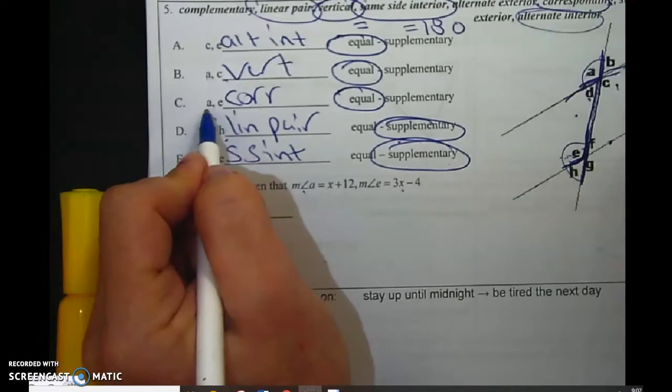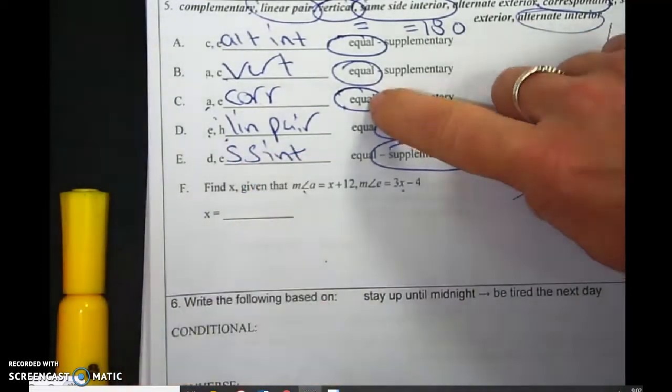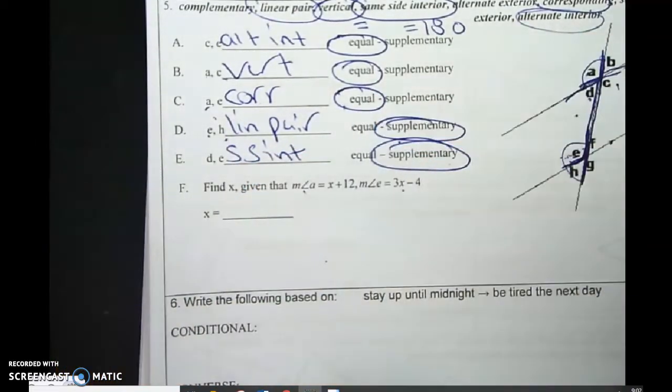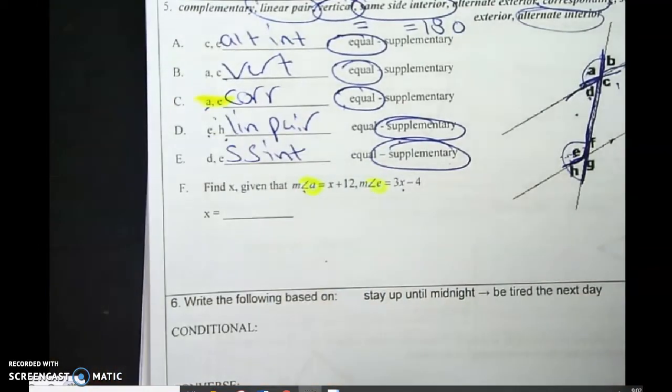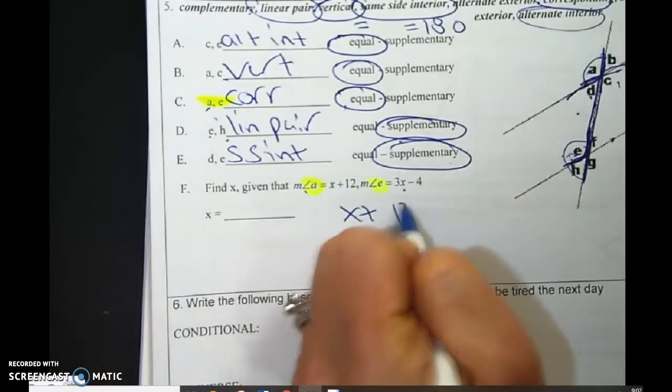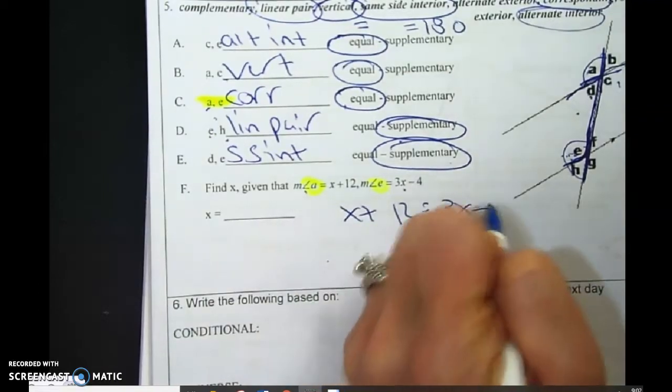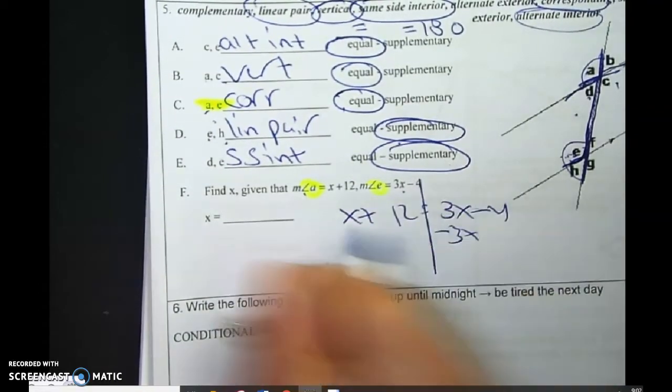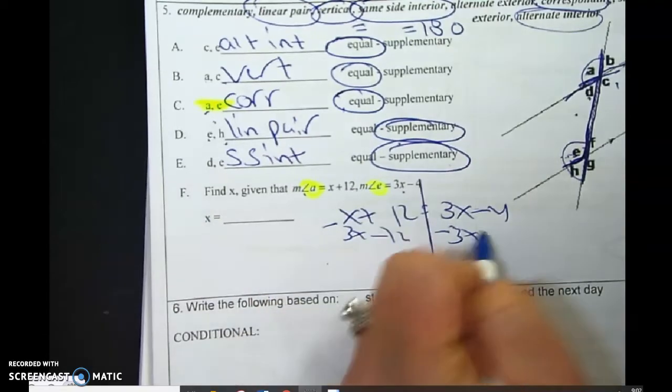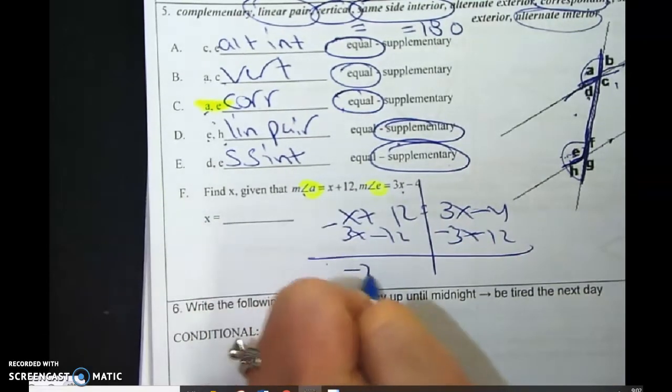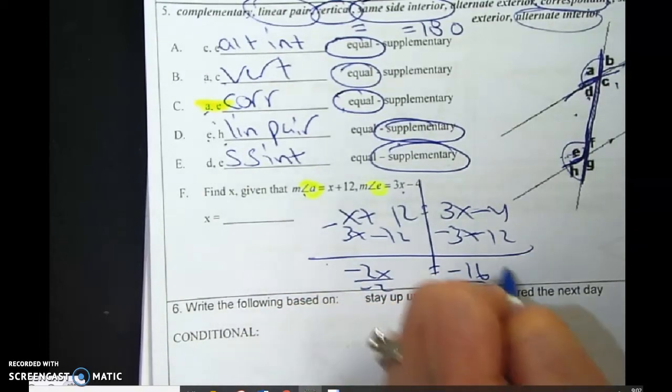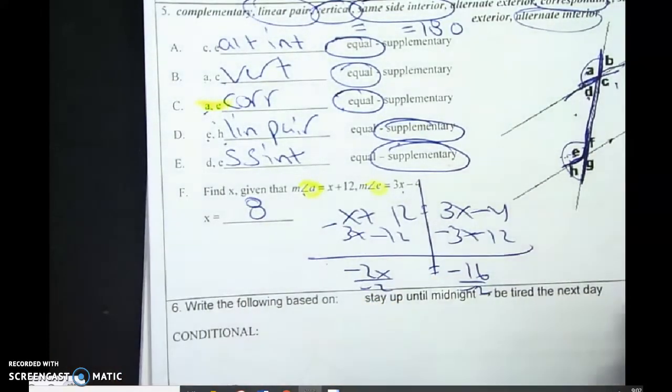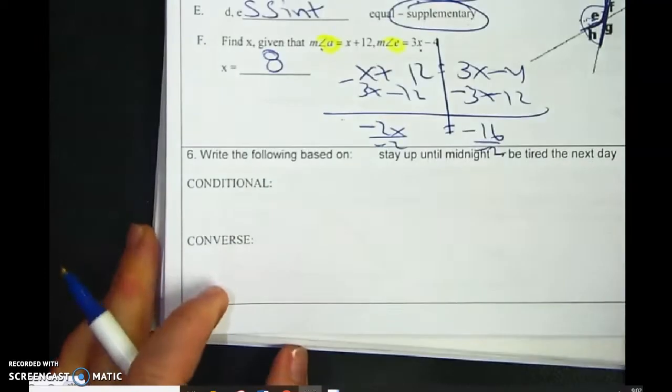So they're saying A and E. We said A and E were equal. Since we said, because they want to know about A and E, and since they said they're equal, I'm going to set them equal to each other. Just like we did last time. X equals 8.